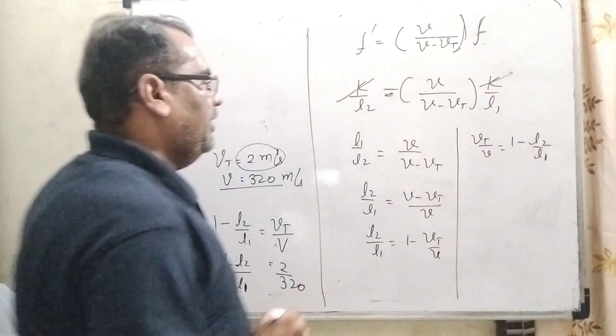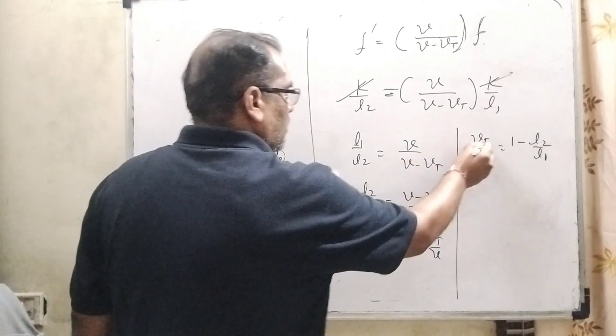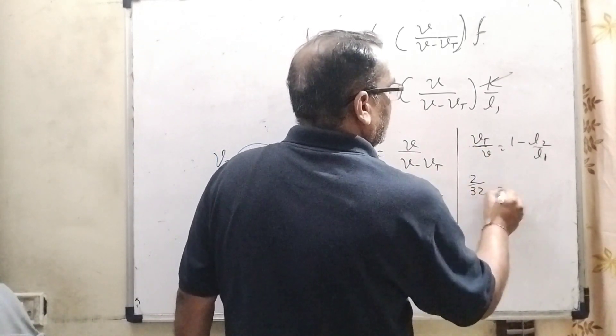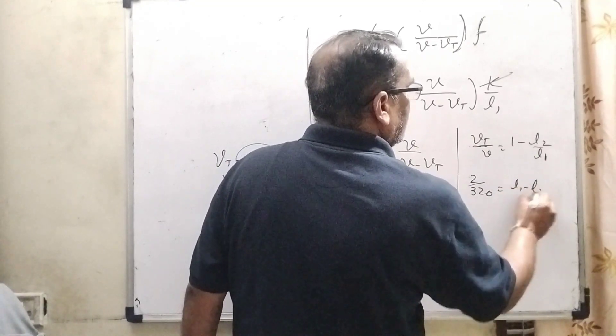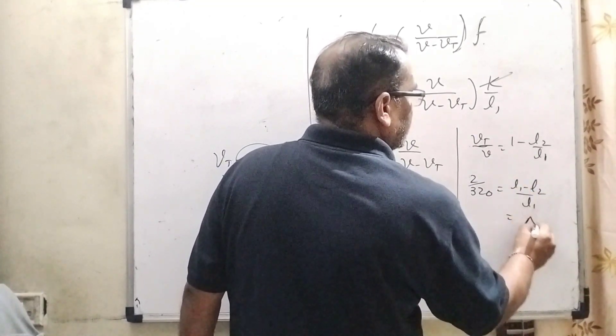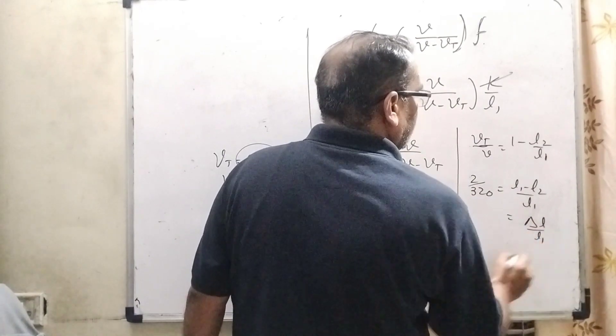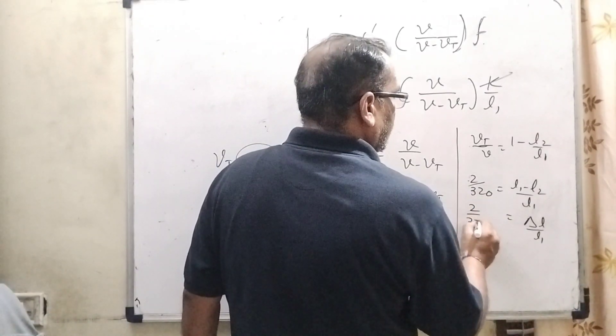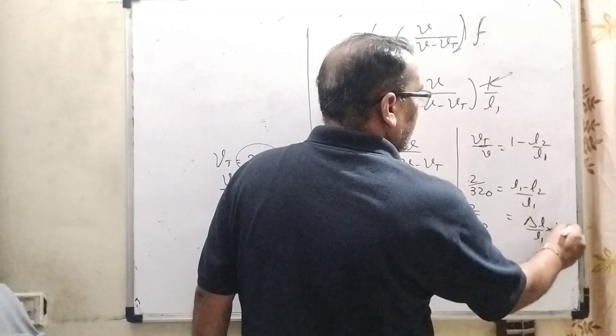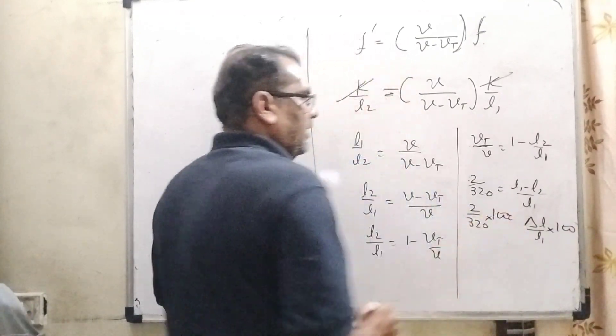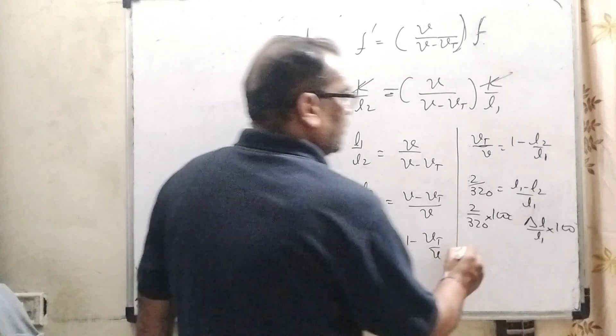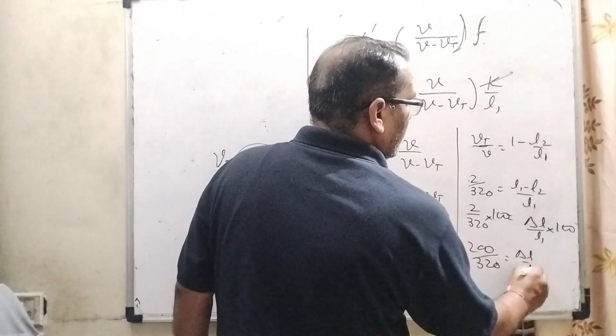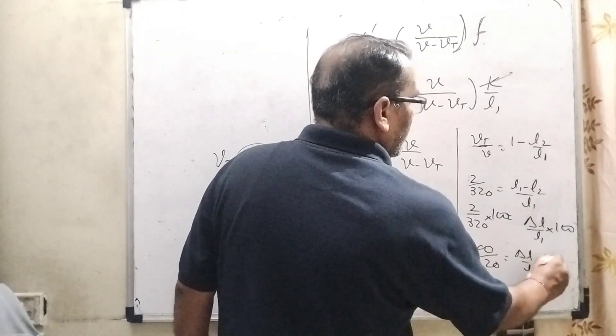Now VT by V equals 1 minus L2 by L1. What is VT? VT is the speed of the sound source, that is 2 meter per second, and V is 320. L1 minus L2 upon L1 can be written as delta L upon L1. That equals 2 upon 320. To find the percentage, multiply by 100. Then 200 by 320 equals delta L upon L1 times 100.